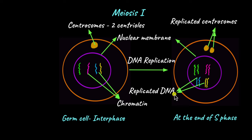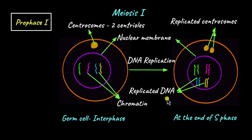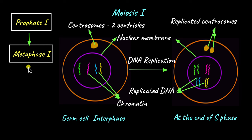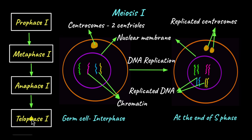So now the cell decides it will undergo meiosis, and it begins with prophase 1, continues to metaphase 1, goes on to anaphase 1, and then ends in telophase 1, after which cytokinesis also follows. Because these phases are part of meiosis 1, they are also labeled as 1: prophase 1, metaphase 1, etc.